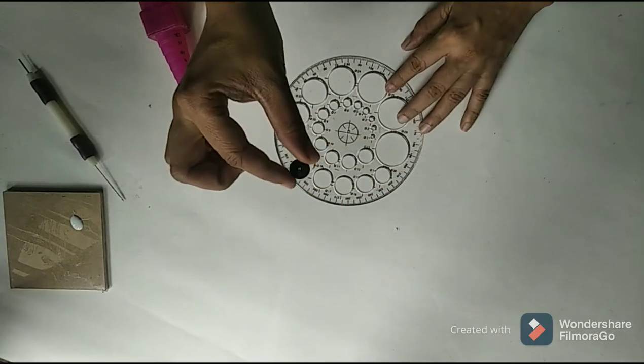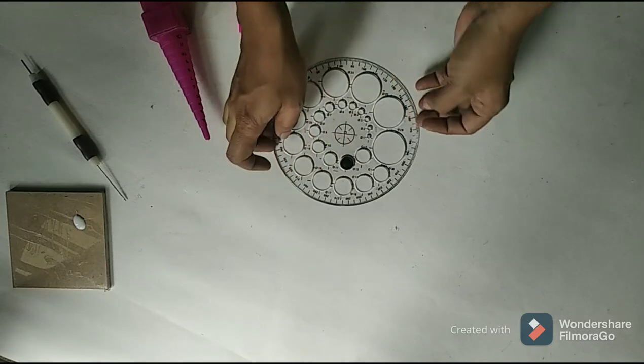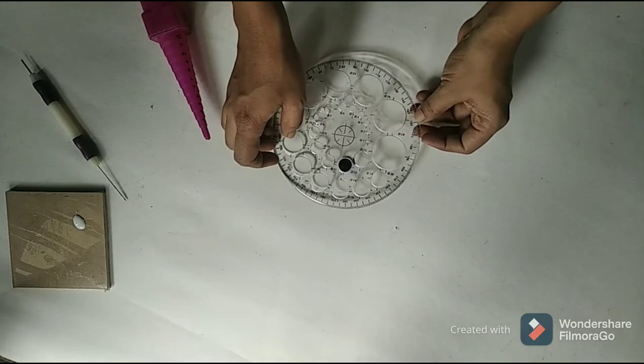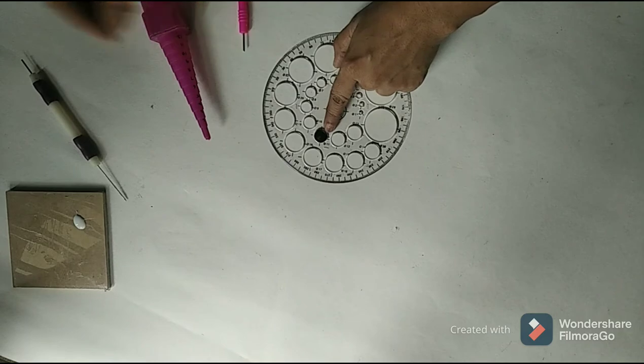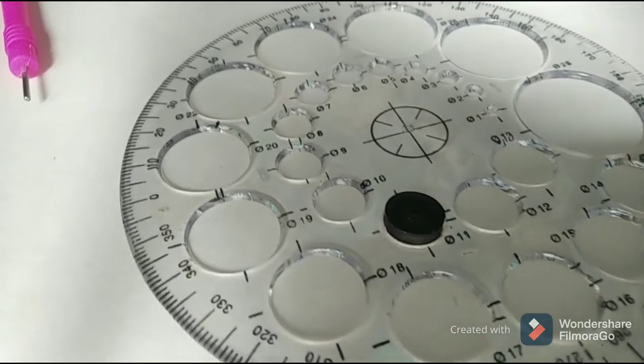Next, I check the right size of the tight coil using the circle scale. In this case, the coil passes right through the 12 number circle, so I choose the next small size, 11.